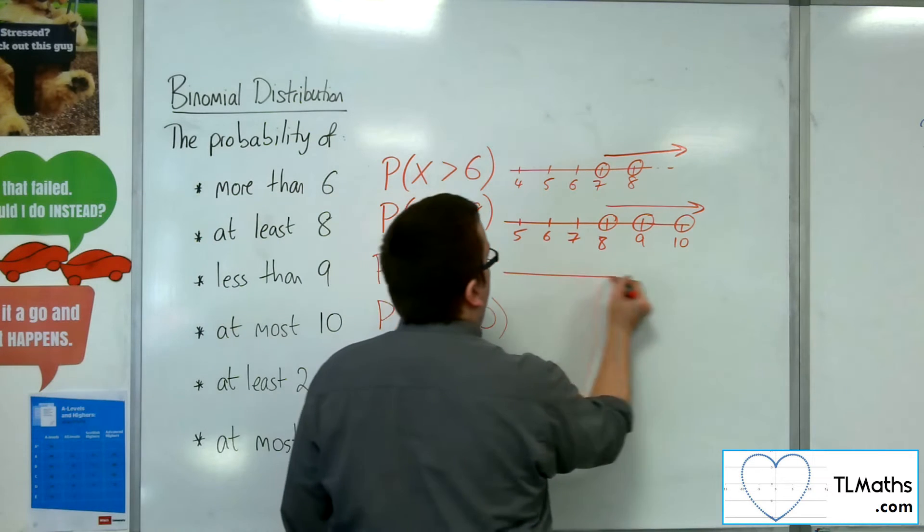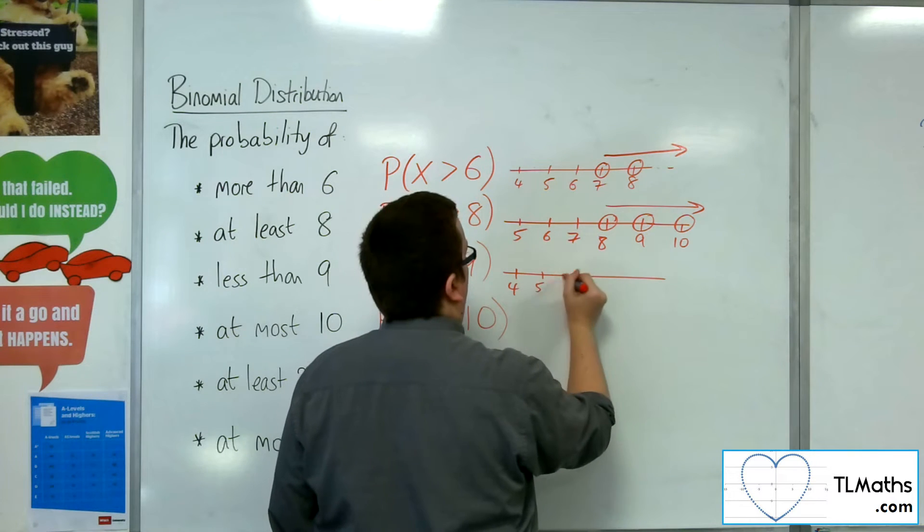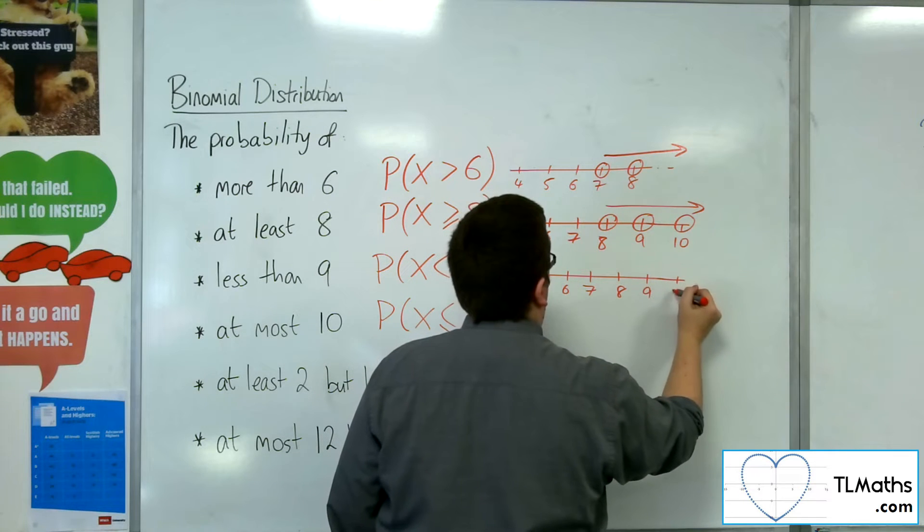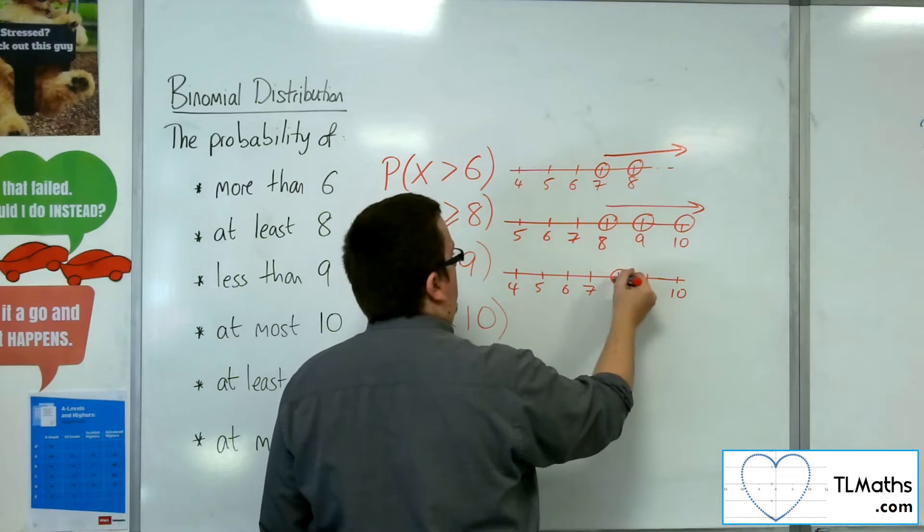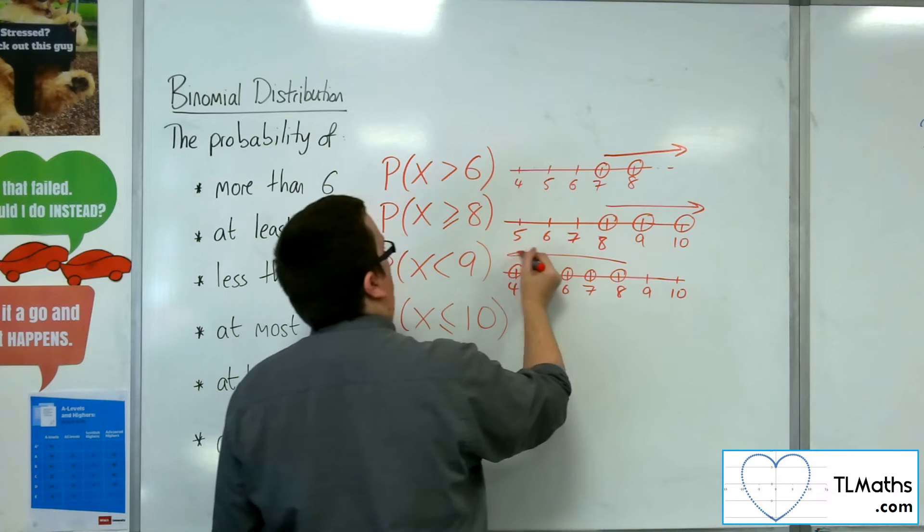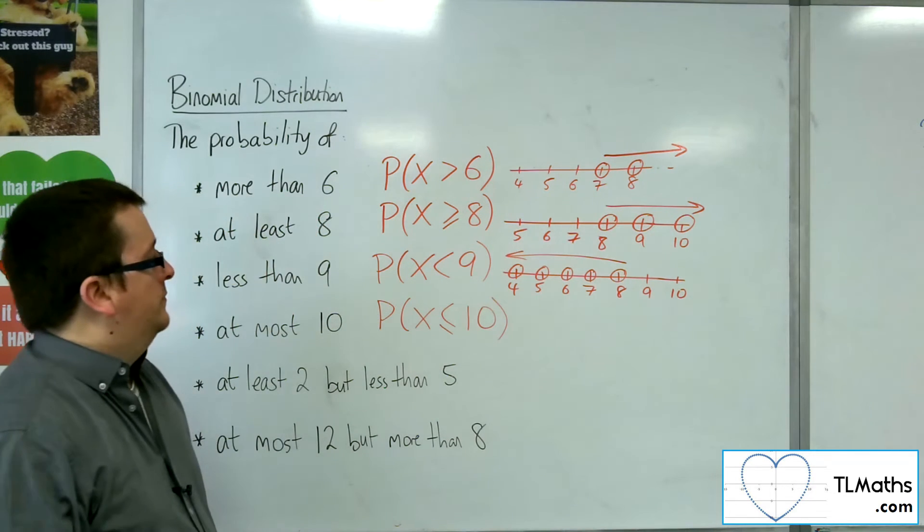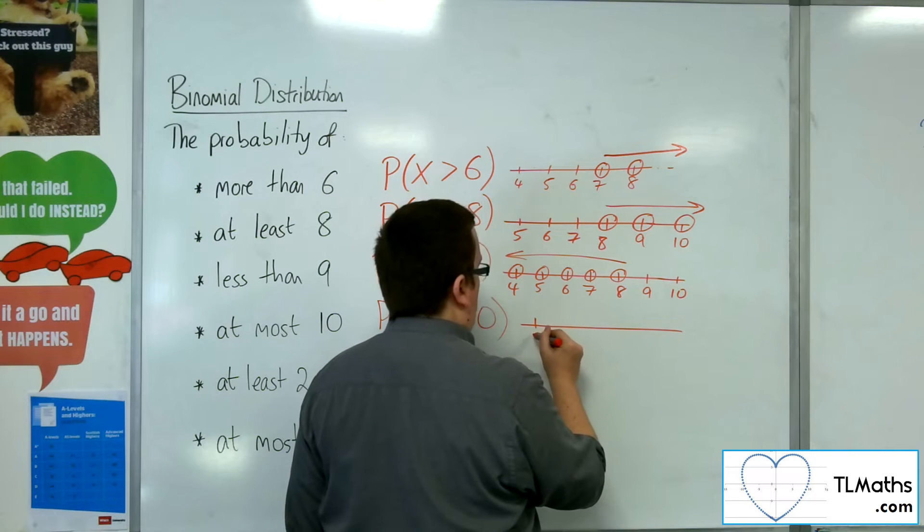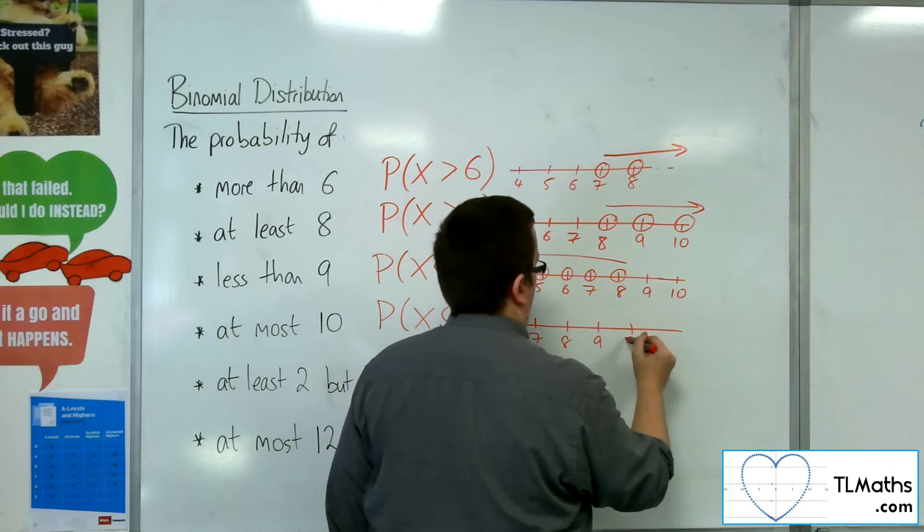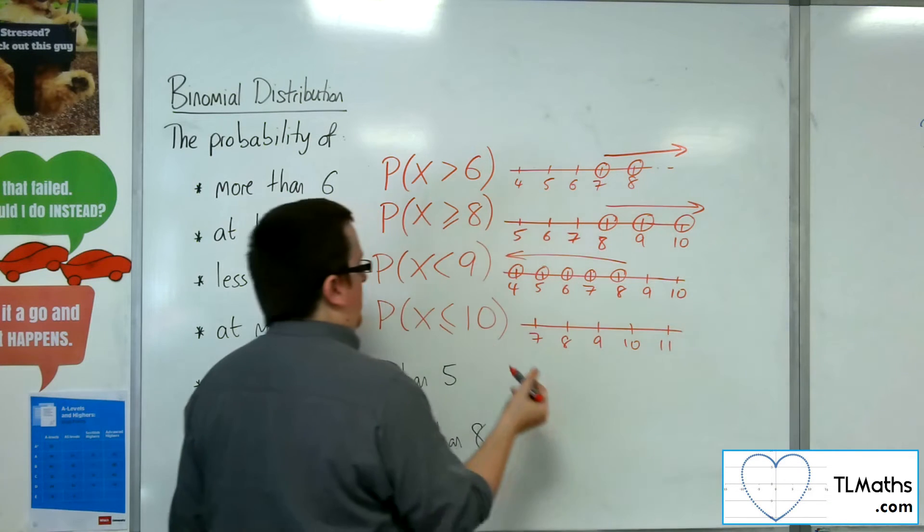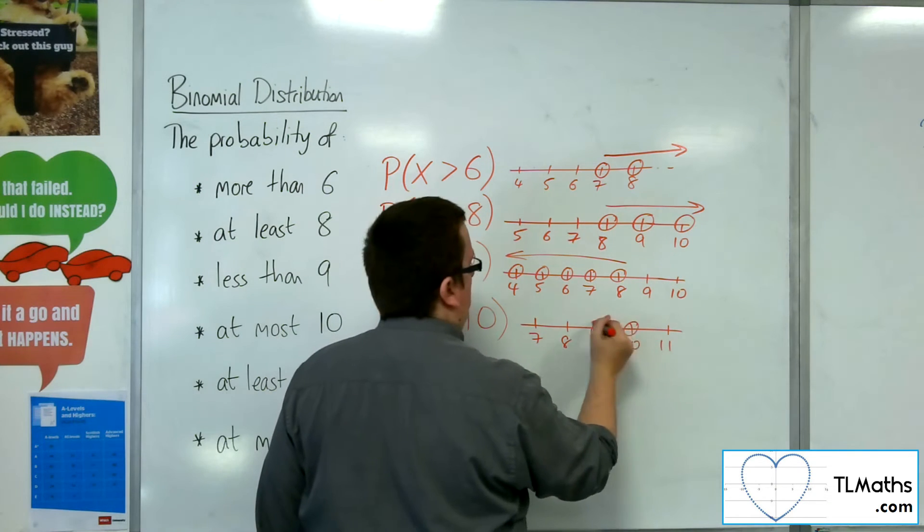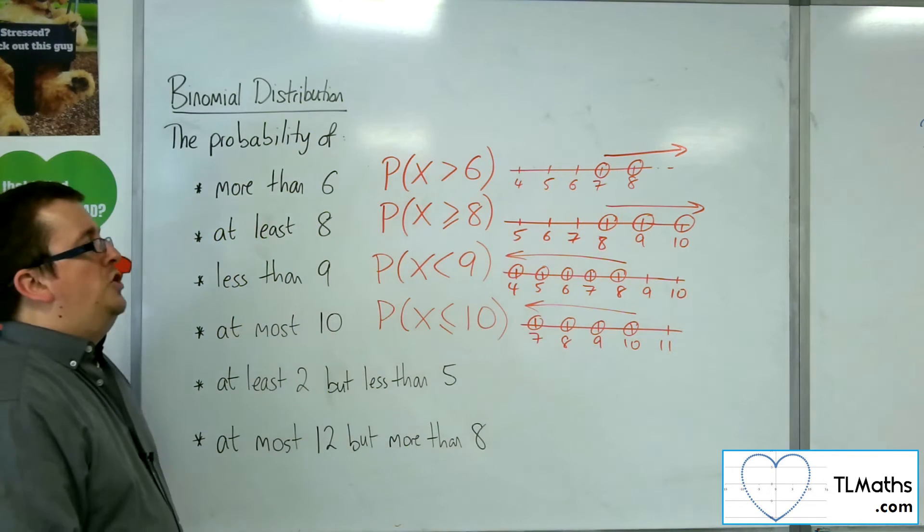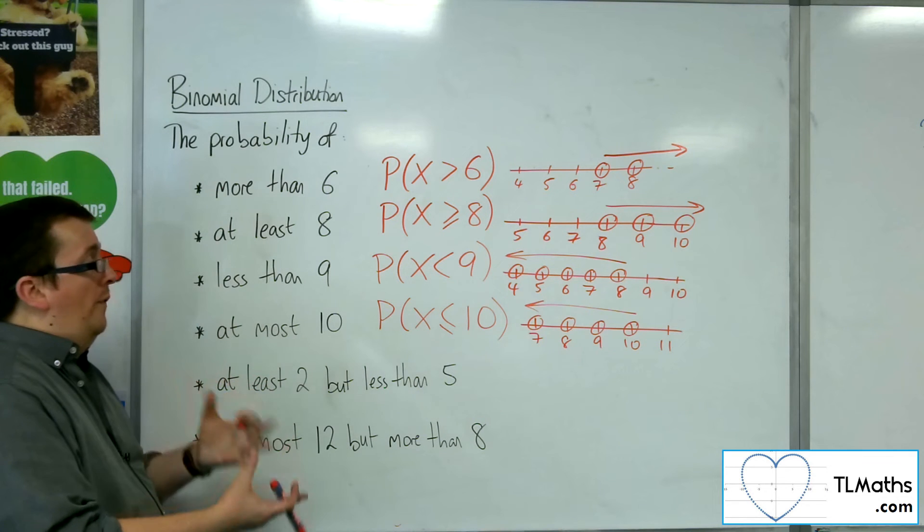For less than 9, I'm going to want all of these and all of those going down as well. Less than or equal to 10, so less than or equal to 10 are 10 or less. So just so you can visualize precisely which probabilities we want.